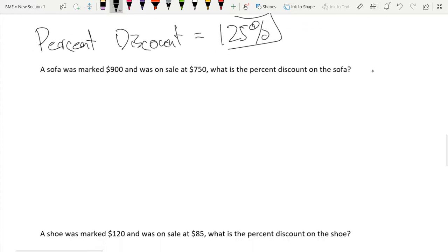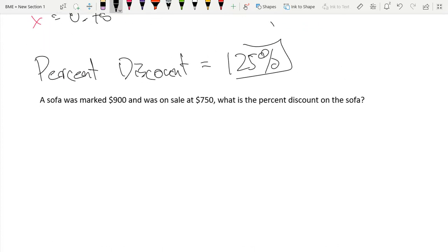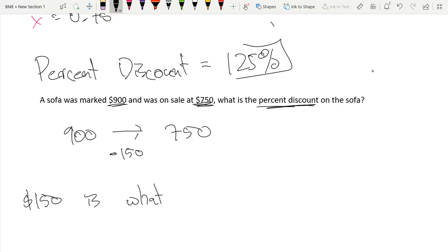Now we have another problem where a sofa was marked $900 and was on sale at $750. What is the percent discount on the sofa? This is the other way in which we can solve these problems. $900 and now it went down to $750, which means we lost $150.